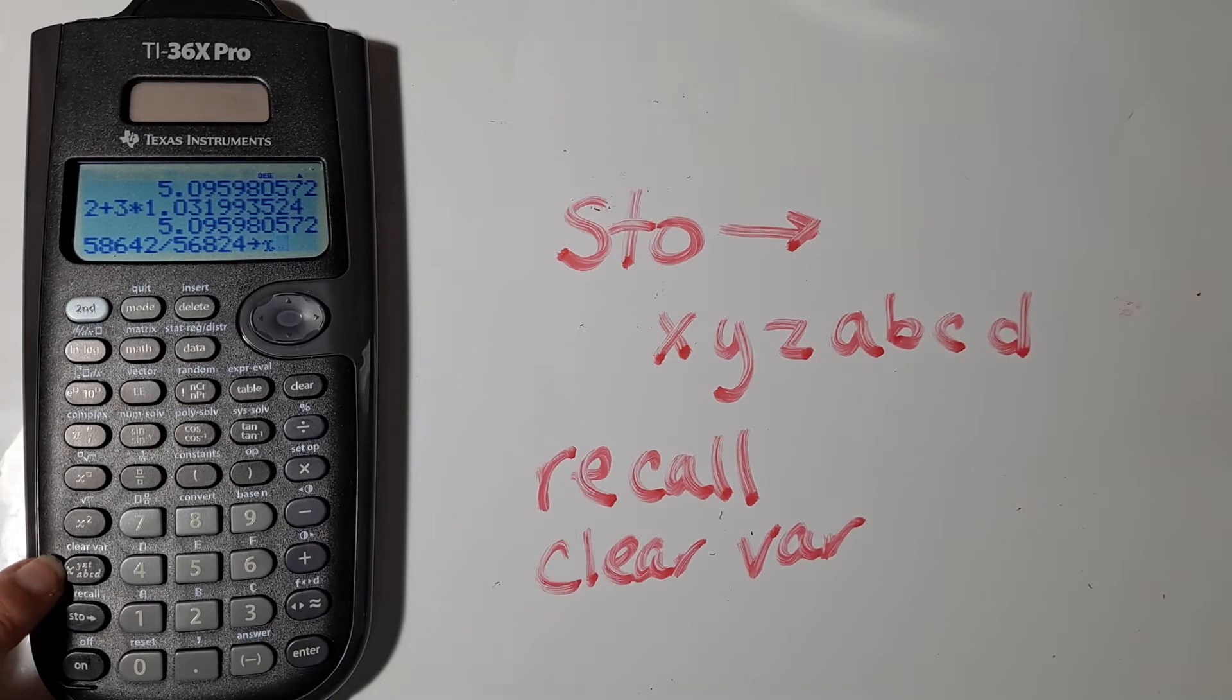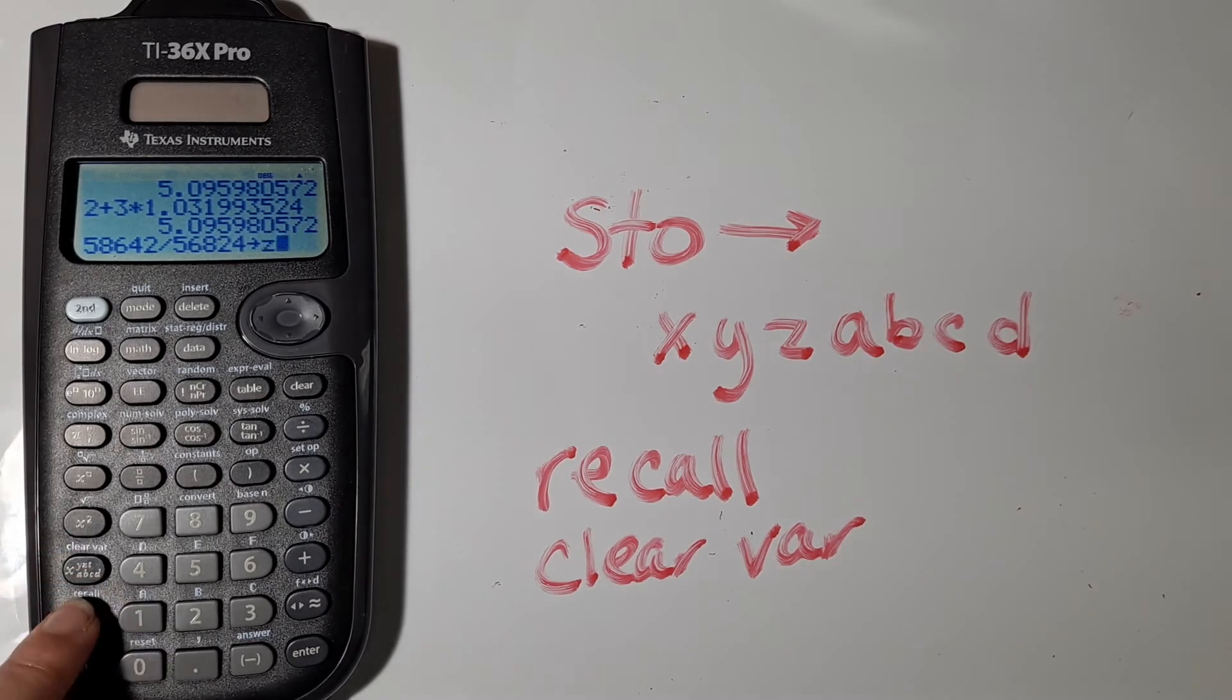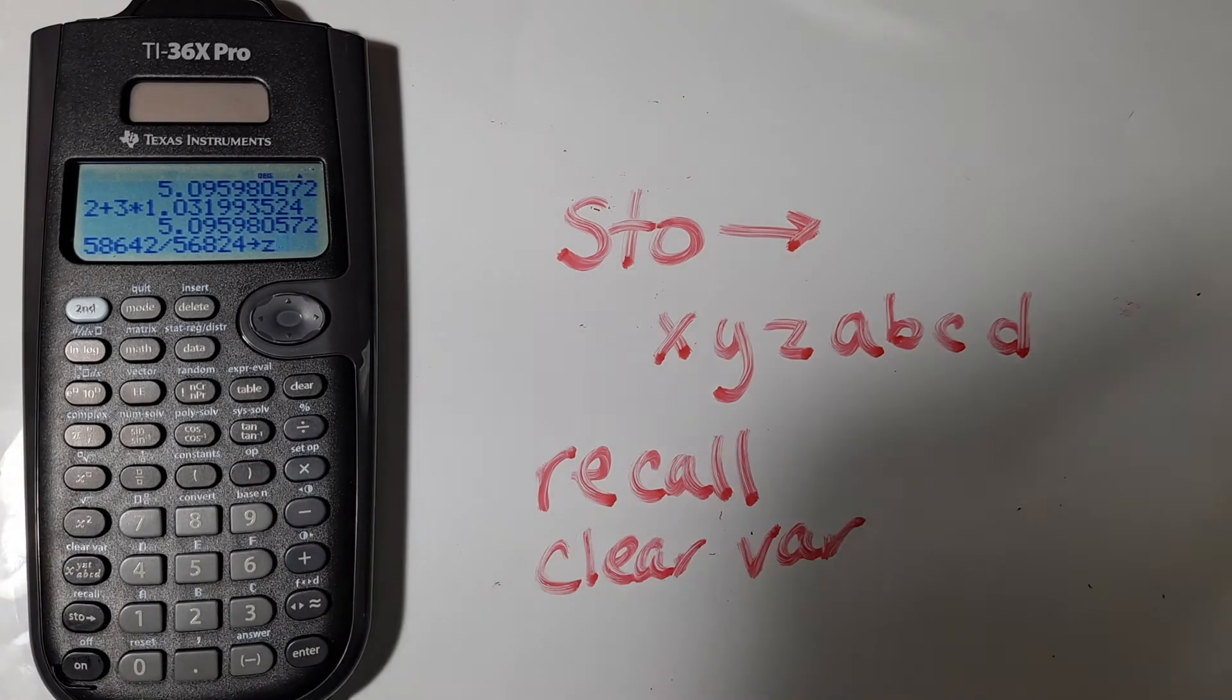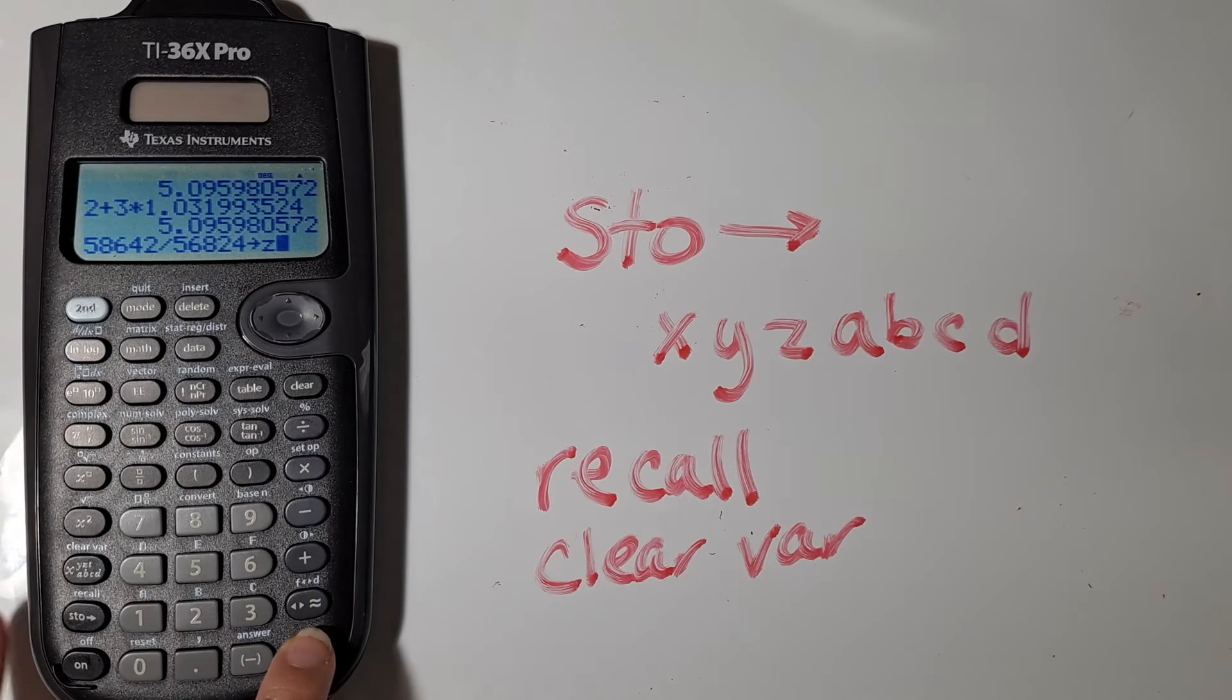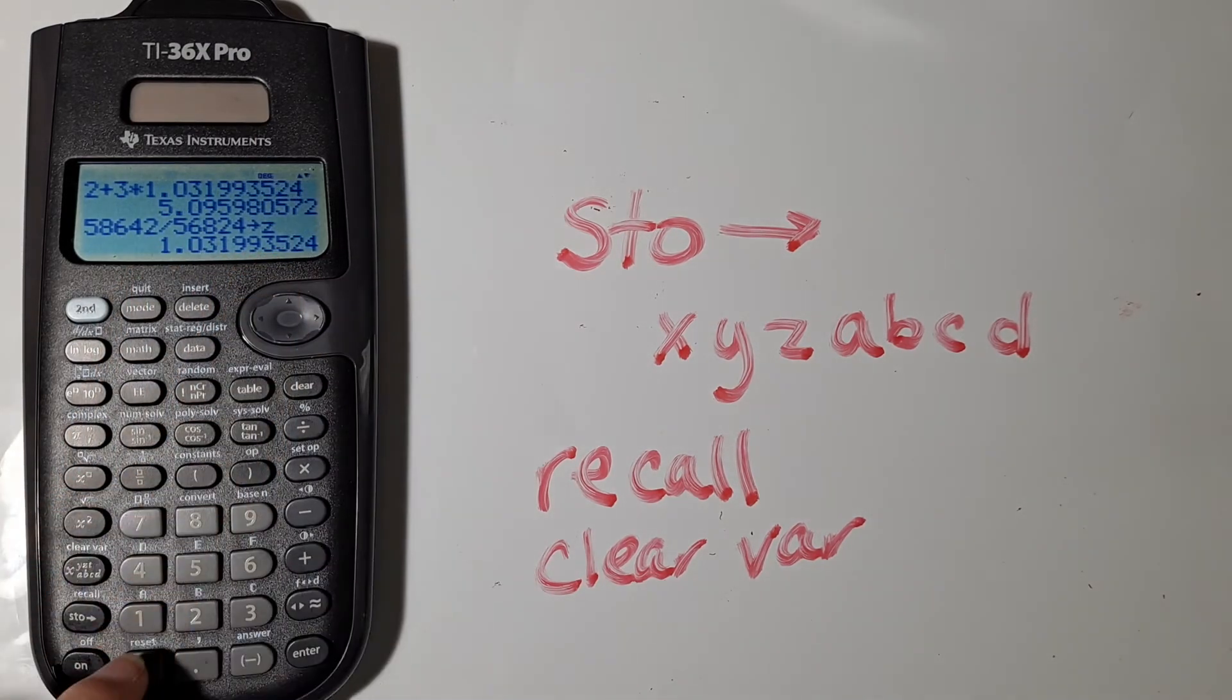The first time you press it, it chooses X, but if you push it again, it will change which letter it is using. So I'm going to say I want to store whatever this calculation gives me as Z. And so now I'm going to store that number as Z.